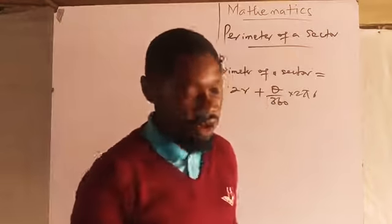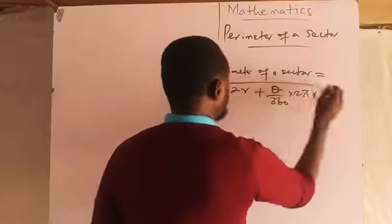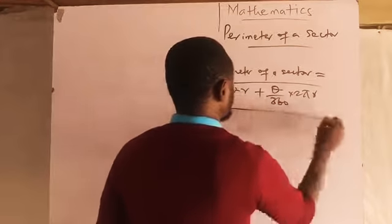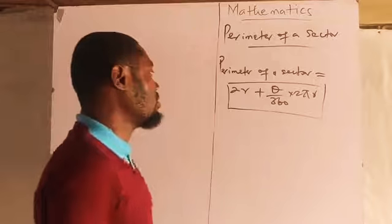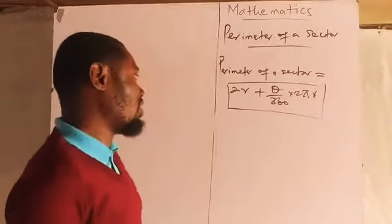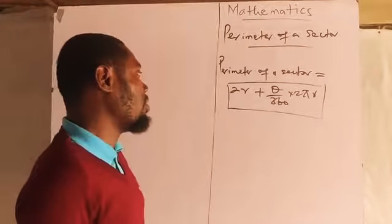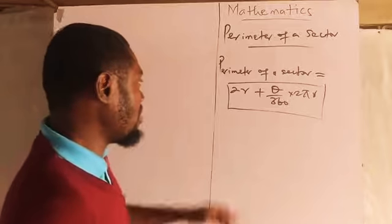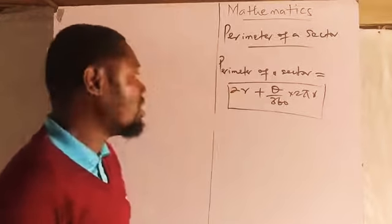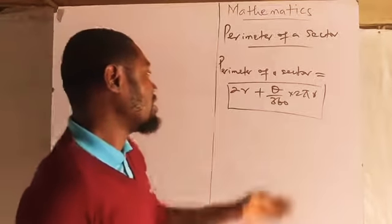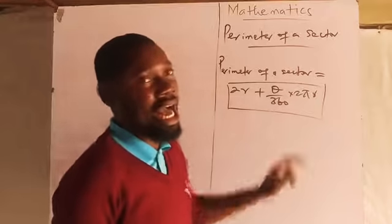So the perimeter of a sector is two r plus theta over 360 times two pi r. You need to find two times the radius given to you, then add it to what you have as your length of arc.